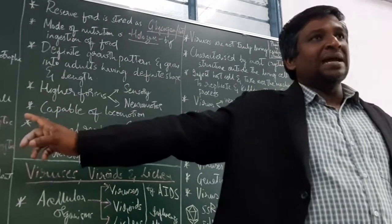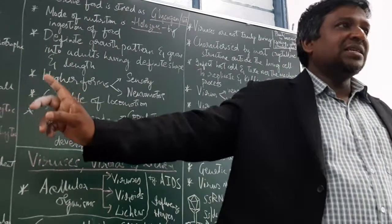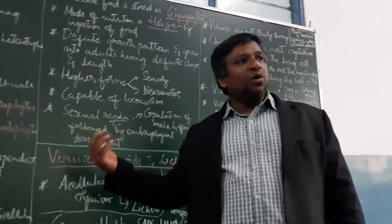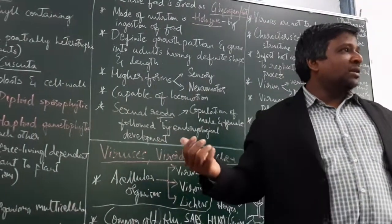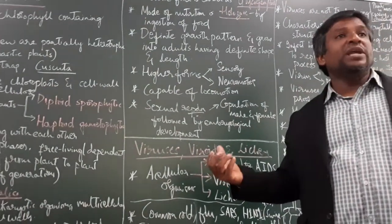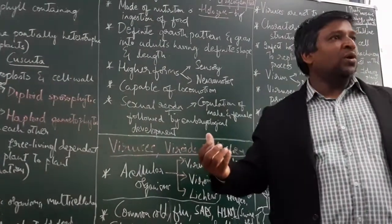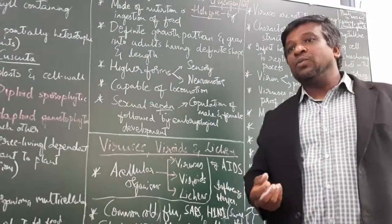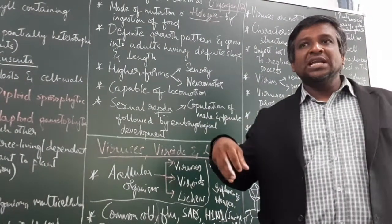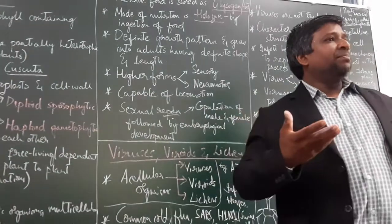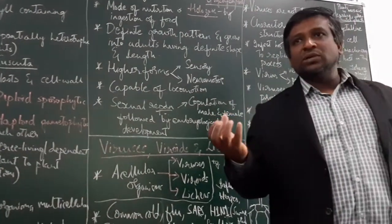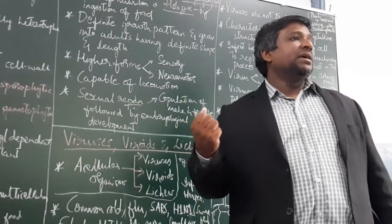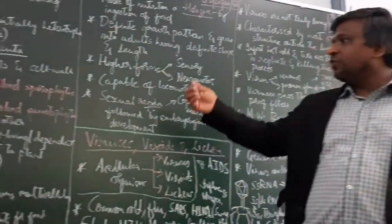What is the reserve food material in case of plants? They store food as starch in their cells or in different organs. Food storing organs are there like in the root or stem. There are some modifications you have studied about where they store food. Roots like carrot, beetroot store food. Stem modifications like in potato store food.